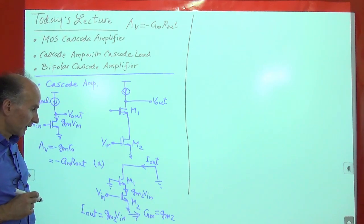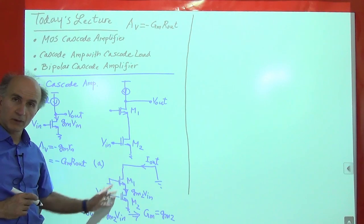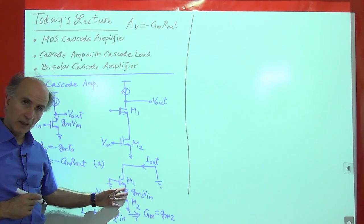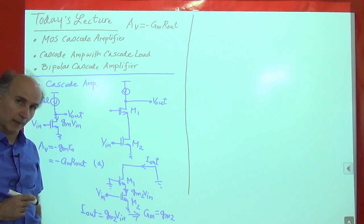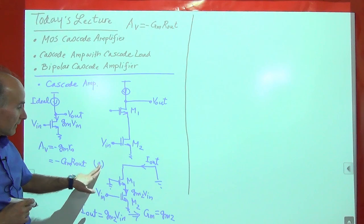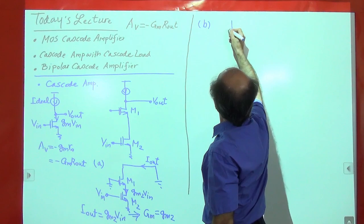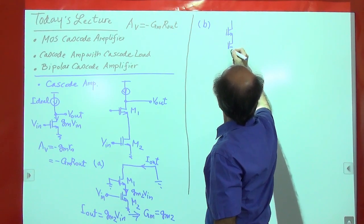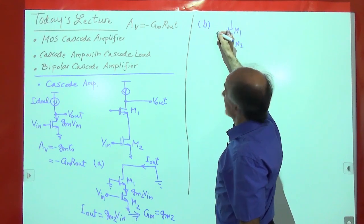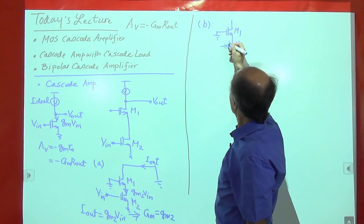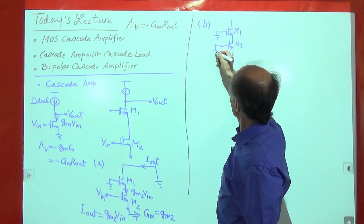By inspection of the circuit, we were able to find the transconductance of this simple cascode amplifier without drawing complex circuits or writing lots of equations. For step B, we need to find R_out. We construct the test circuit: the gate bias becomes AC ground, all independent sources are set to zero, and we apply a voltage at the output to measure the resulting current.